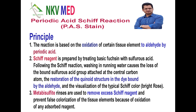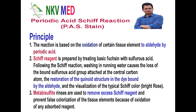The PAS reaction is based on oxidation of certain tissue elements to aldehydes by periodic acid — here the aldehyde group gets exposed. After that, Schiff reagent is prepared by treating basic fuchsin with sulfurous acid, following the Schiff reaction.